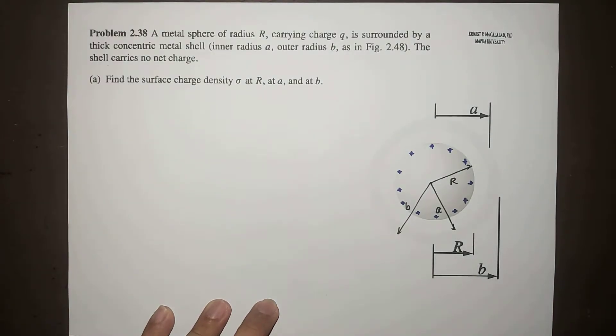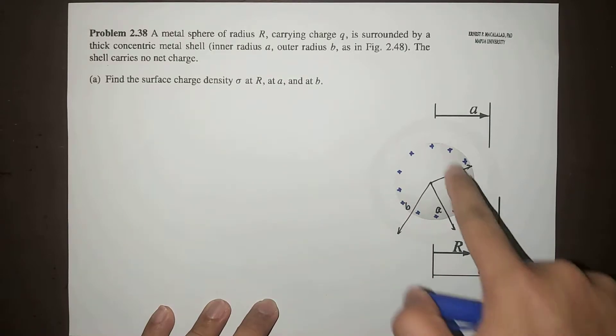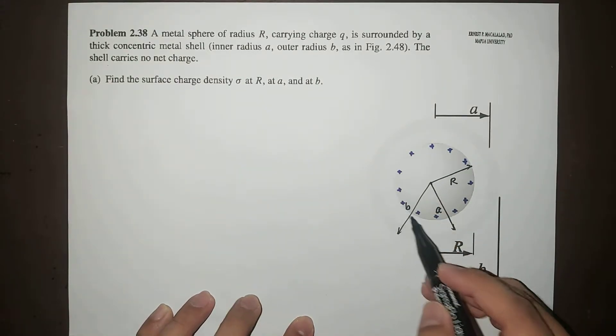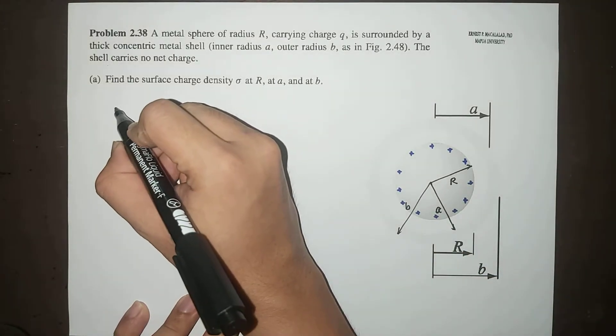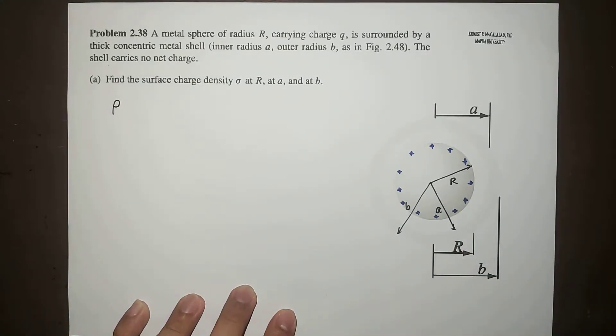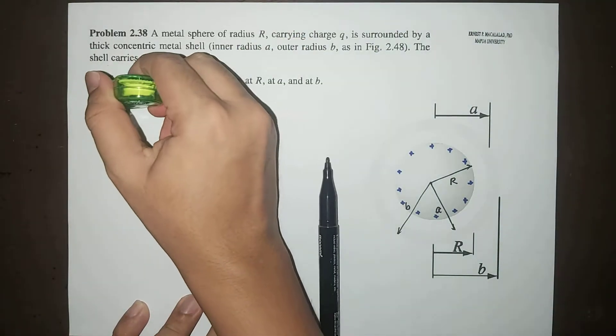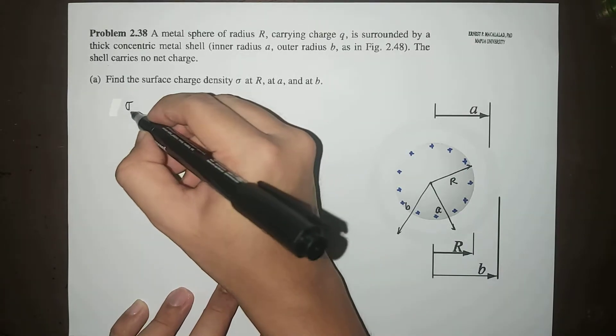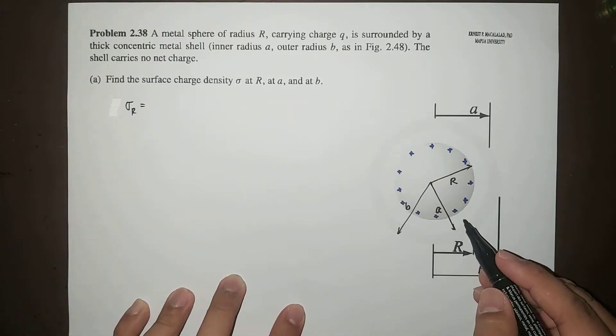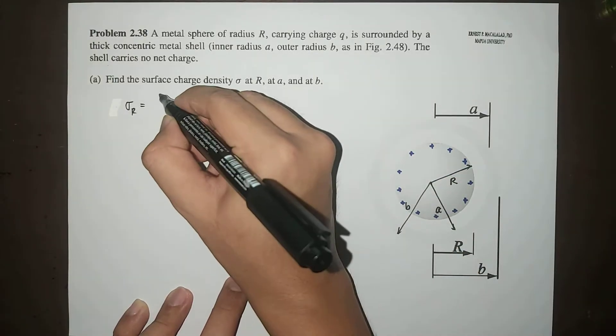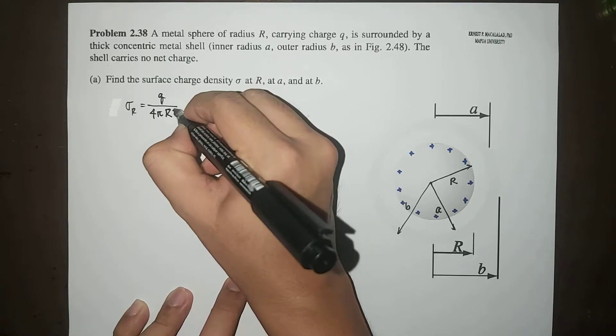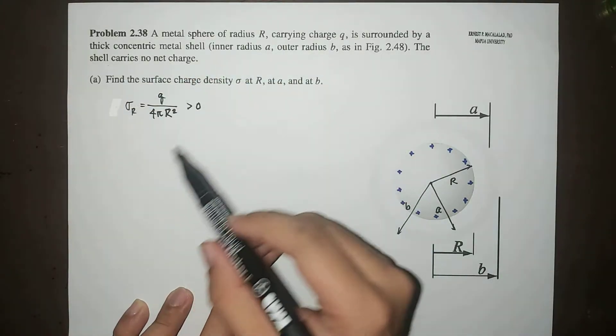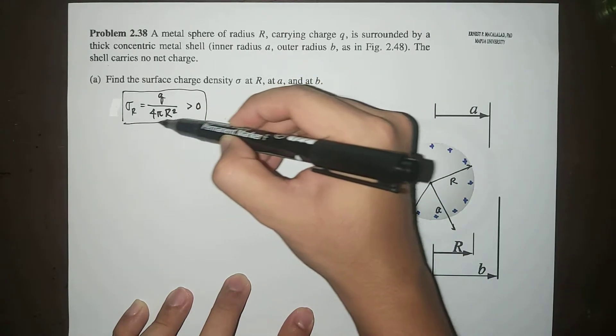What does this mean? It means that the net charge of this metal sphere that resides at the surface tells us we can calculate the surface charge density sigma at radius R to just be the total charge at the surface divided by the area of the surface. So this is Q over 4πR², and we assume this is positive. This is the charge density at radius R.